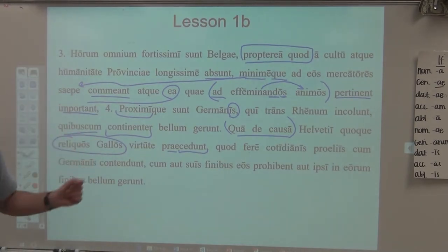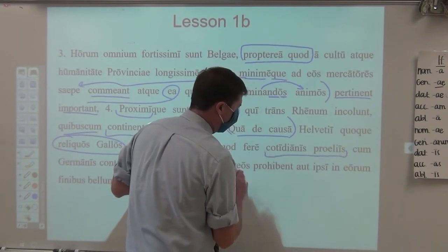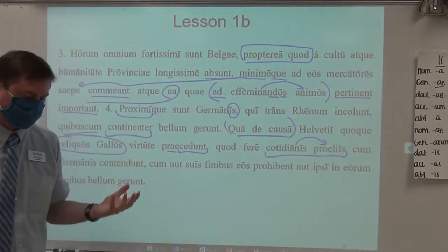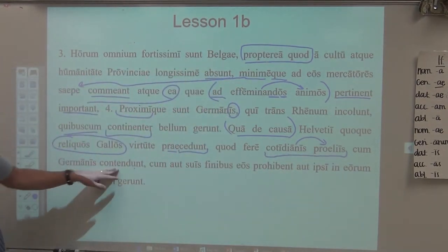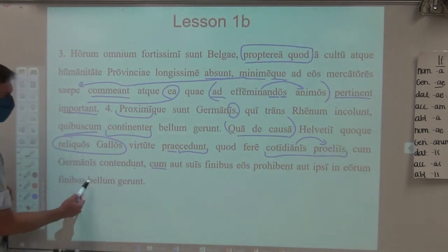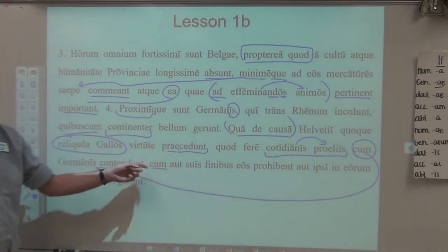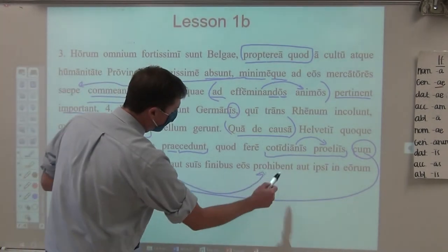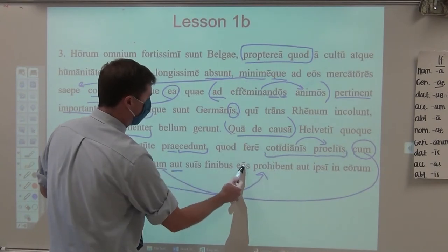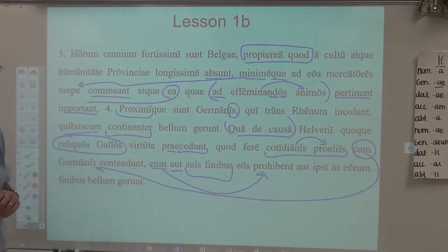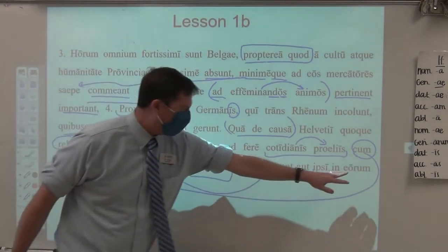So they are also, like the Belgians, really tough, and it's for the same reason: because in almost — that is an adverb meaning almost daily battles — they contend, they fight 'cum Germanis,' with the Germans. Note here: this 'cum' means 'with' because it takes an ablative object of the preposition, whereas the other 'cum' is going to mean 'when' because it is a subordinating word with a verb — when either they, the Helvetians, prohibit the Germans from their own borders, or they themselves, the Helvetians, wage war in the borders of the Germans.